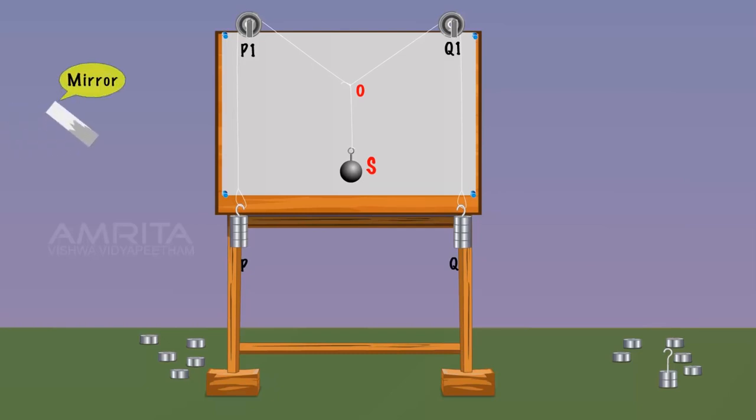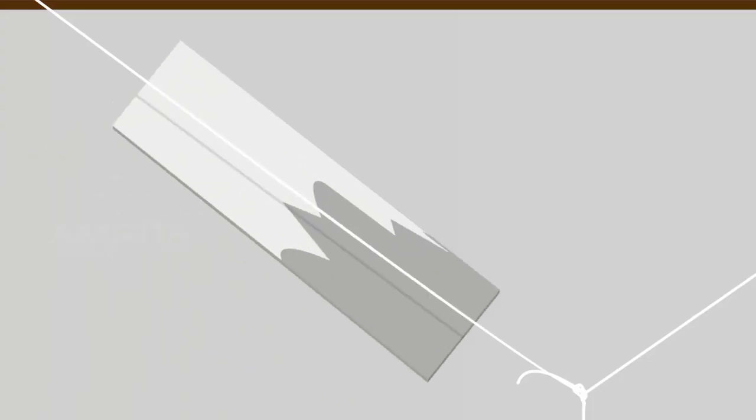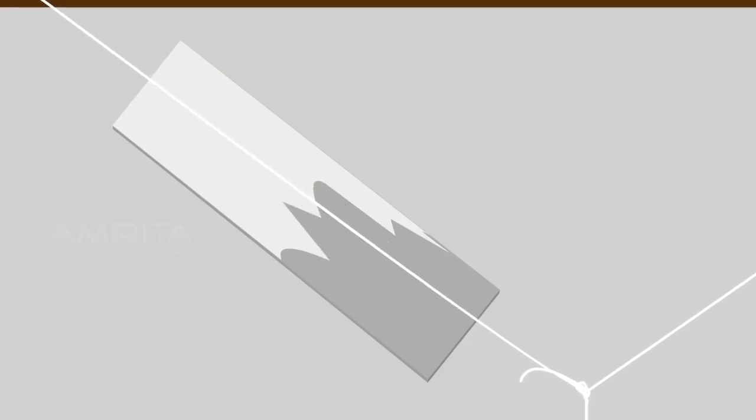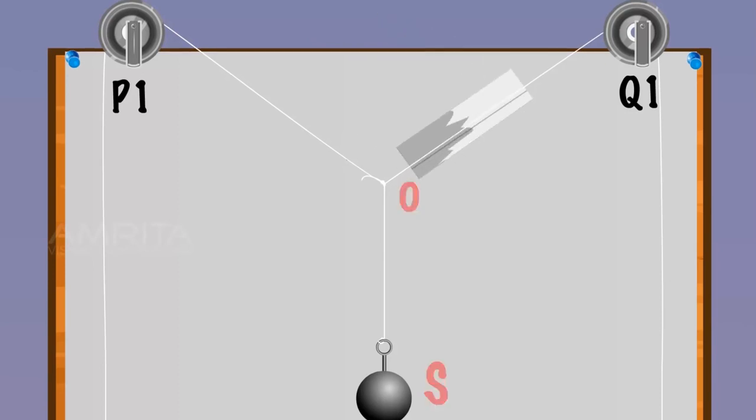Place a mirror strip beneath the thread and mark the points with a pencil at the edges of the mirror where its image coincides. Do this for the other two threads.